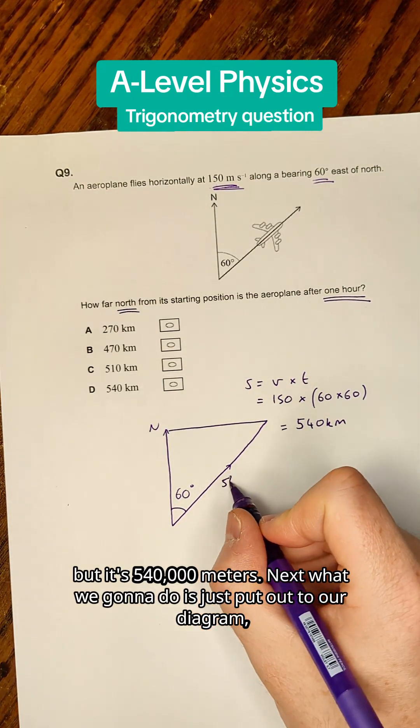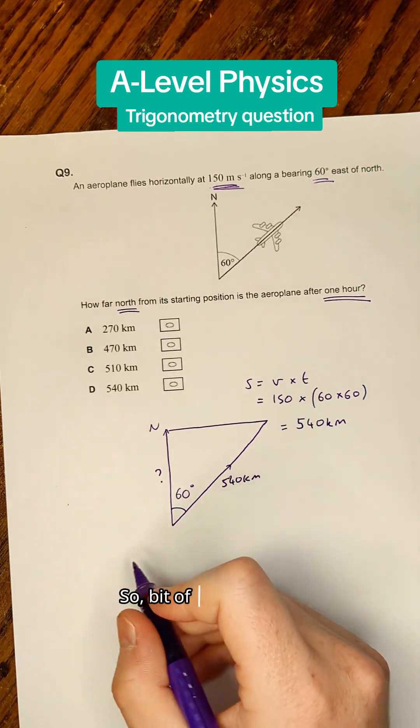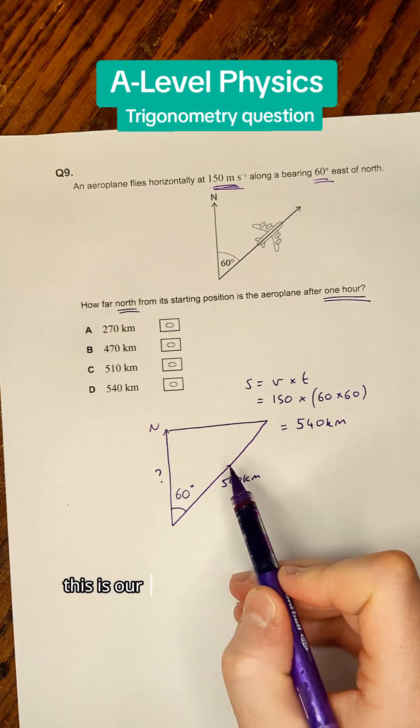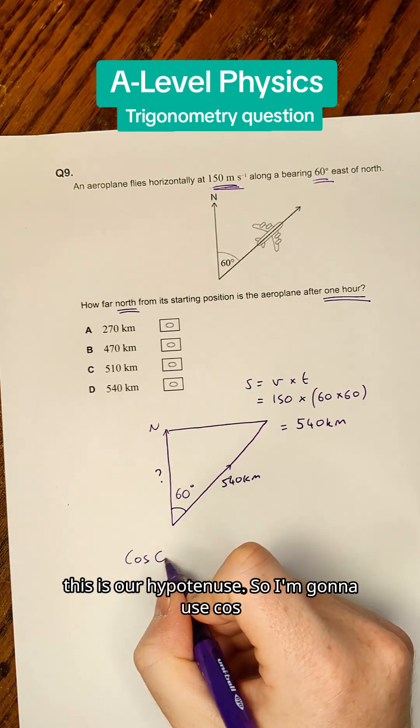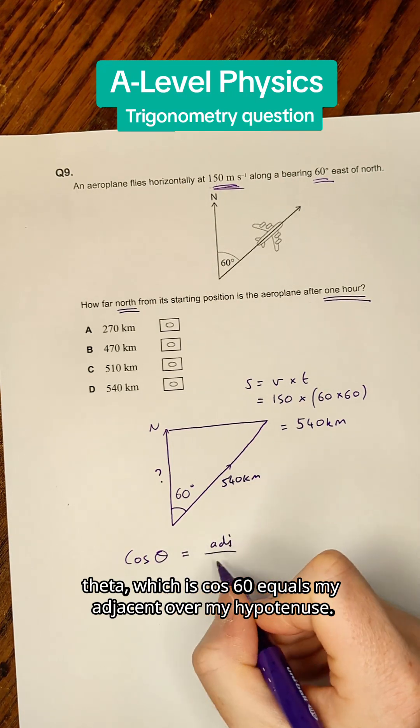Next, we put that into our diagram - 540 - and then figure out what this side is. Using trigonometry, we know this is our adjacent and this is our hypotenuse, so we use cos theta, which is cos 60 equals adjacent over hypotenuse.